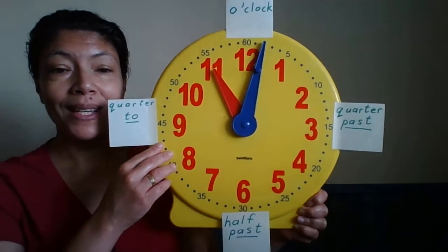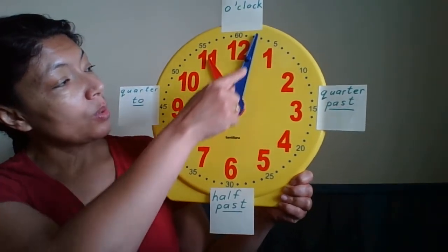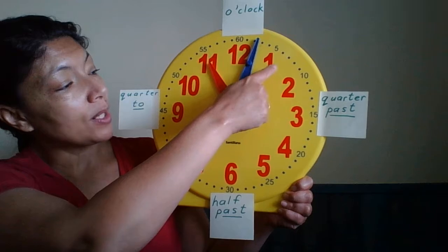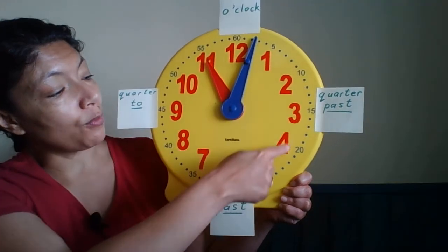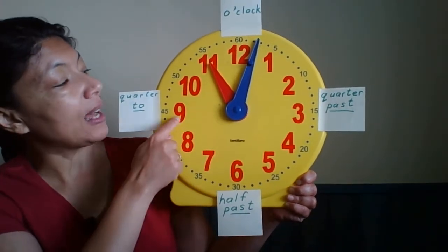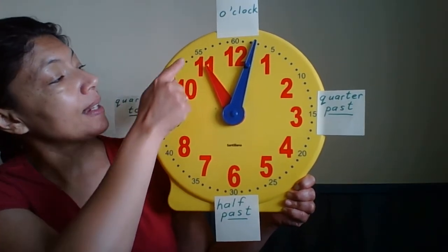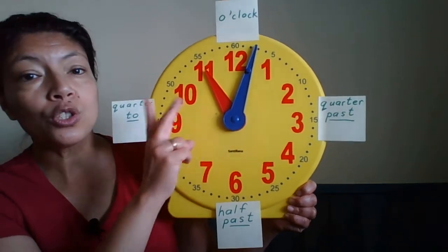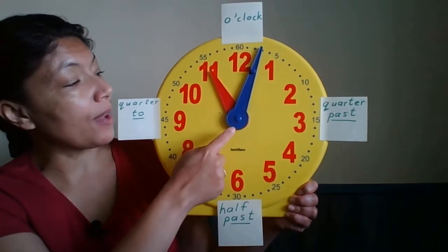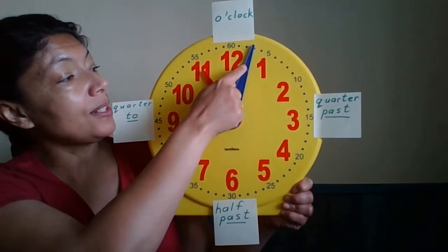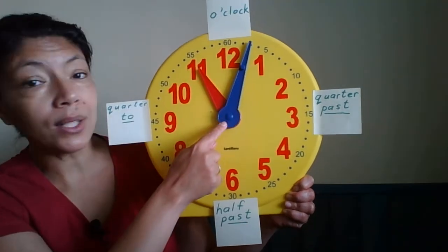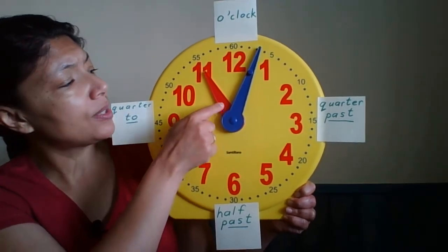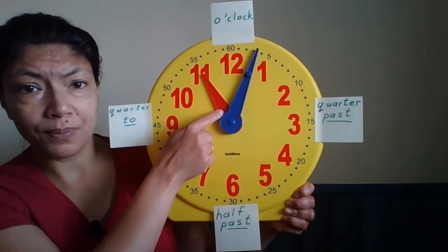On the clock we have numbers 1, 2, 3, 4, 5, 6, 7, 8, 9, 10, 11 and 12. And we have two hands. We have the big hand — this blue one. And we have a small hand — this red one.